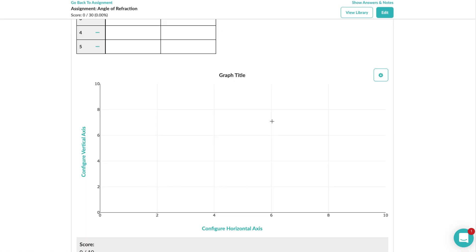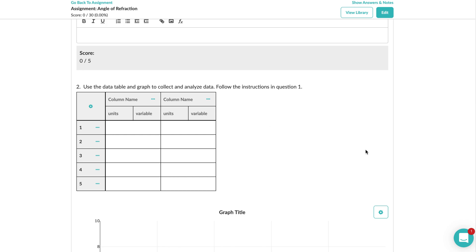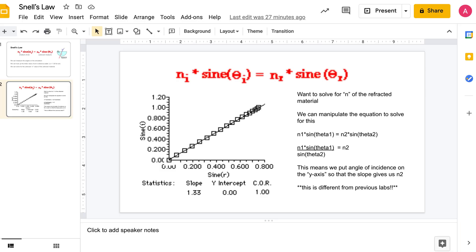For those of you that might be struggling with the reference table, you're going to do your angle of incidence because that is your dependent variable. The units are going to be in degrees. And then your dependent variable is the angle of refraction, so you would put that and that's going to be measured in degrees.